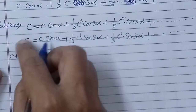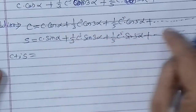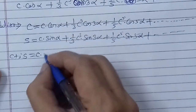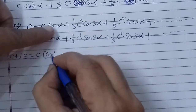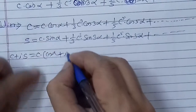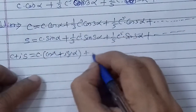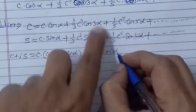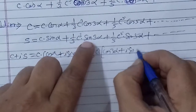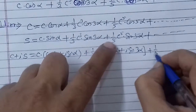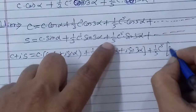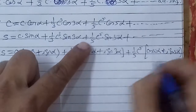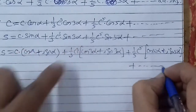In the C + iS method, we multiply S by i and add corresponding terms. C is common, so in the first term we get cos α + i sin α. Similarly, (1/3)C³ is common giving cos 3α + i sin 3α. And likewise (1/5)C⁵ gives cos 5α + i sin 5α, and so on to infinity.